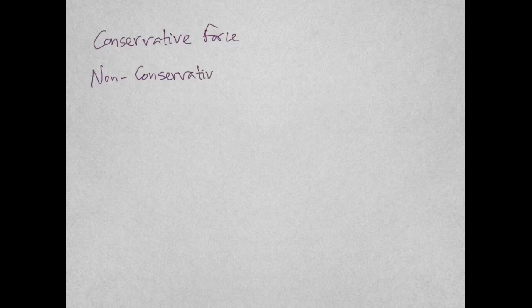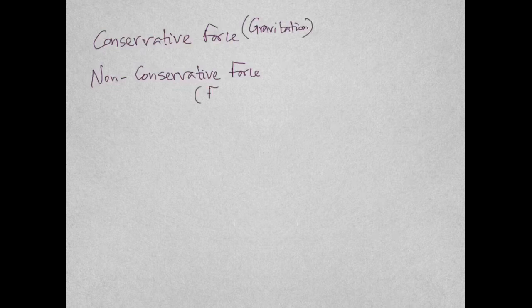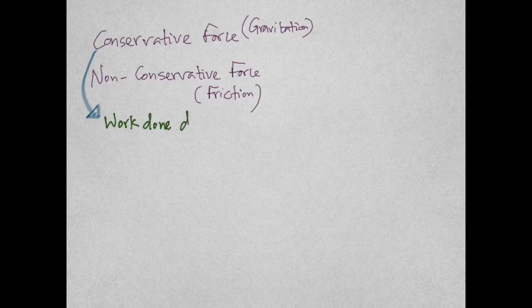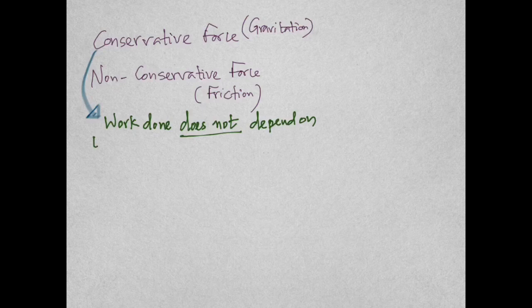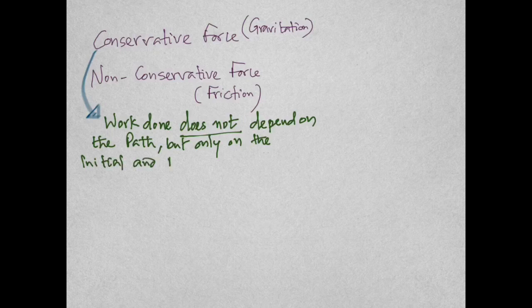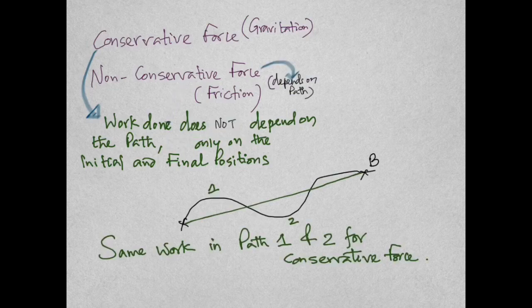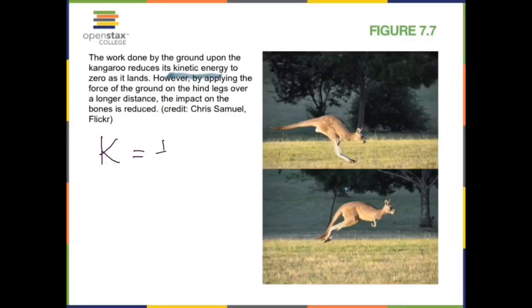There are two types of forces. A conservative force is one where the work done does not depend on the path taken. A non-conservative force is one where the work done depends on the path taken — for example, friction. For conservative forces, it only depends on the initial and the final positions. You can take any path — it only depends on the initial and final positions. Here you can see that the work is the same for both path one and two, because it's a conservative force.